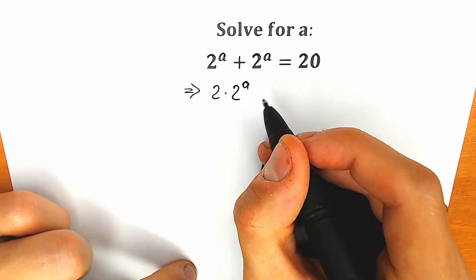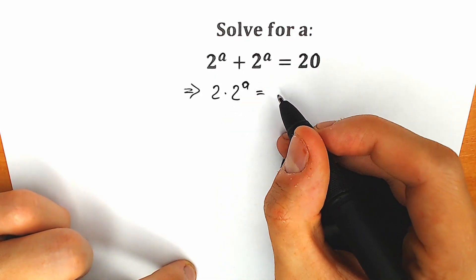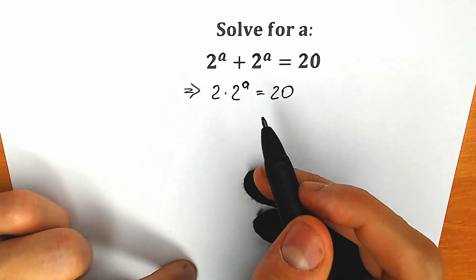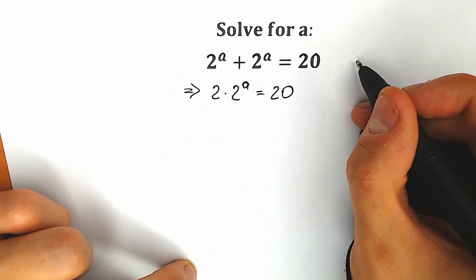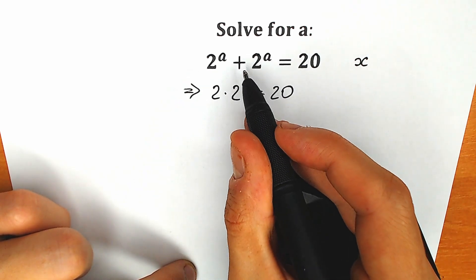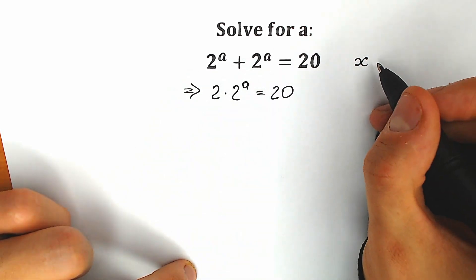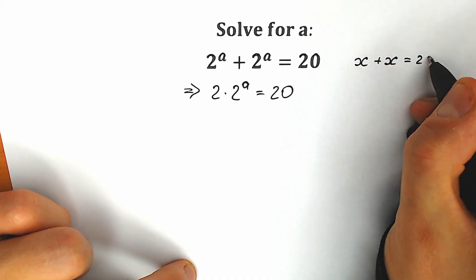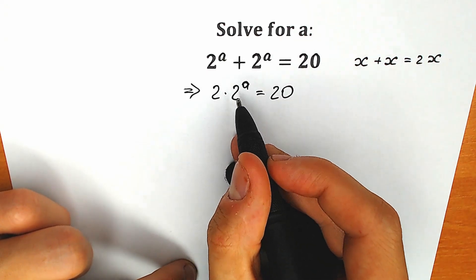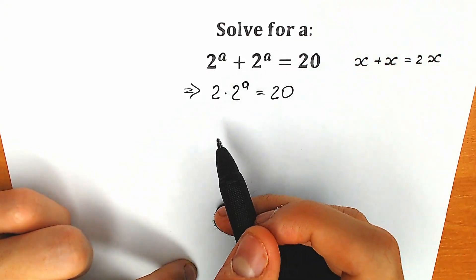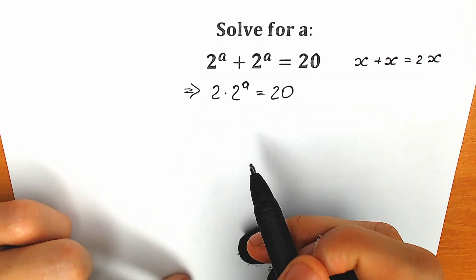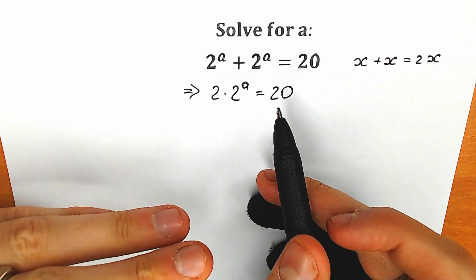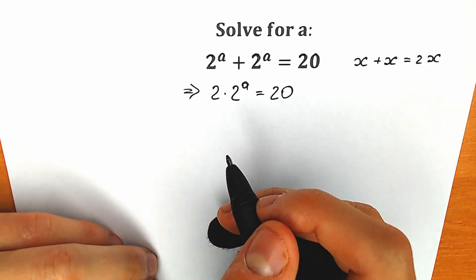A lot of students might be asking why we have 2 times 2 to the power a. Here's a quick example: 2 to the a is our x, and we add to this x the same x, so we add the same 2 to the power a. So x plus x equal to 2x, and we have the same thing right here. But x equals 2 to the a, so we have 2 times 2 to the power a. A lot of students are confused about this step, so here's my quick explanation.